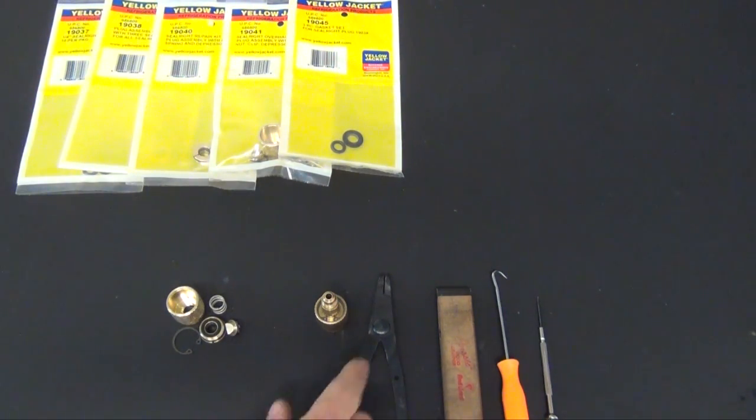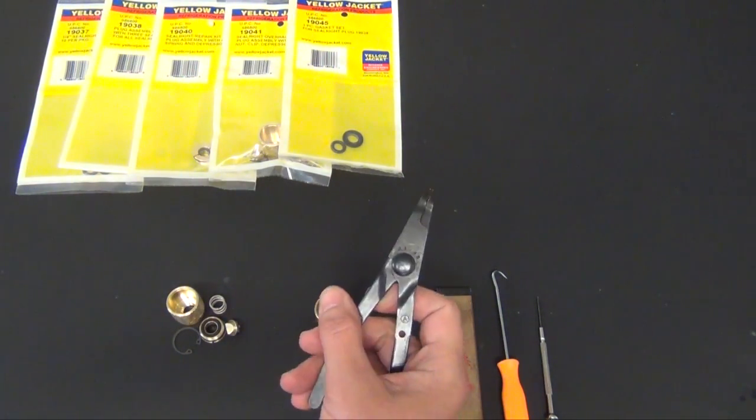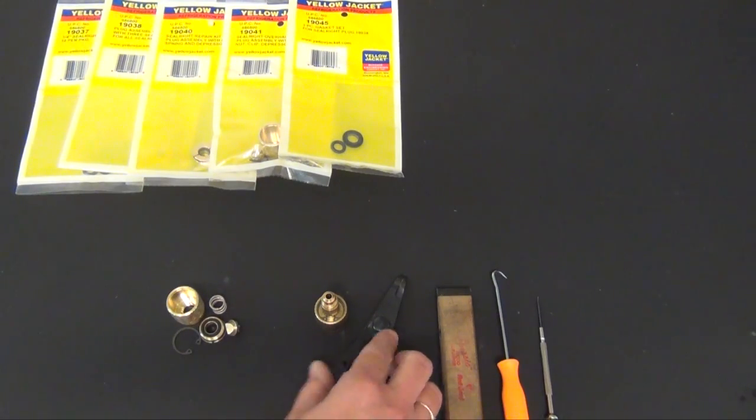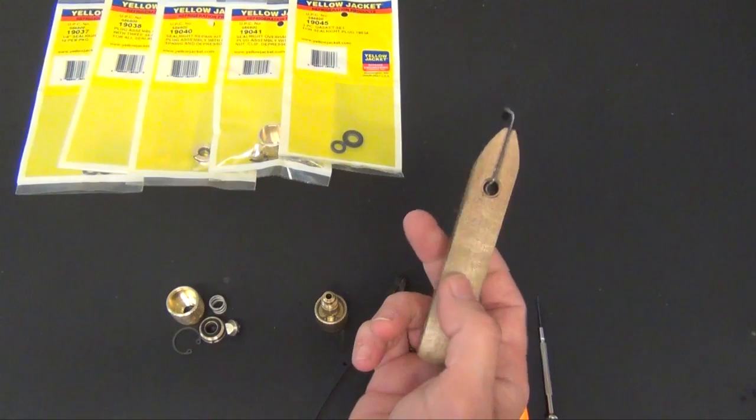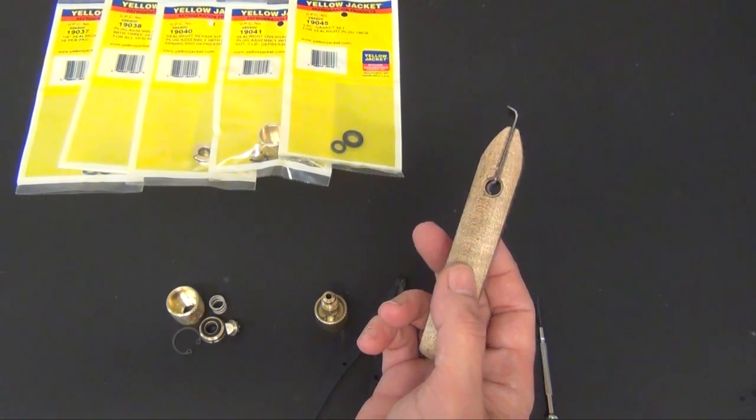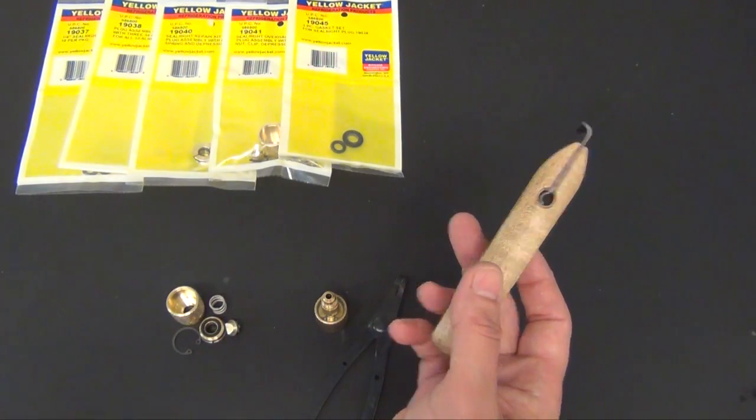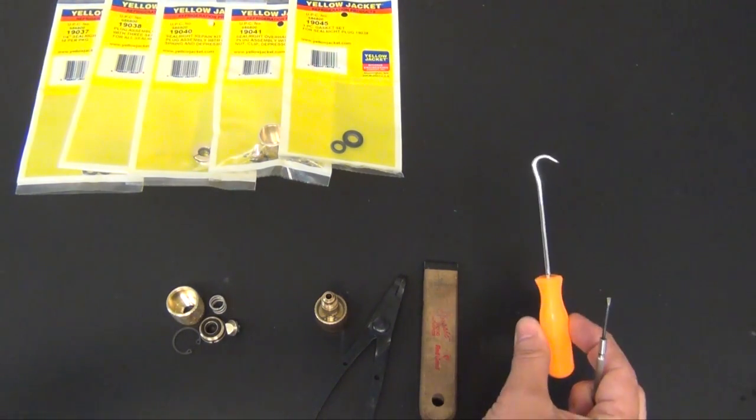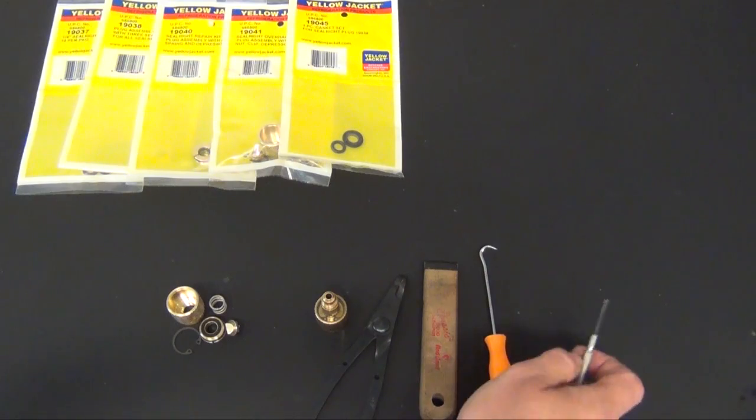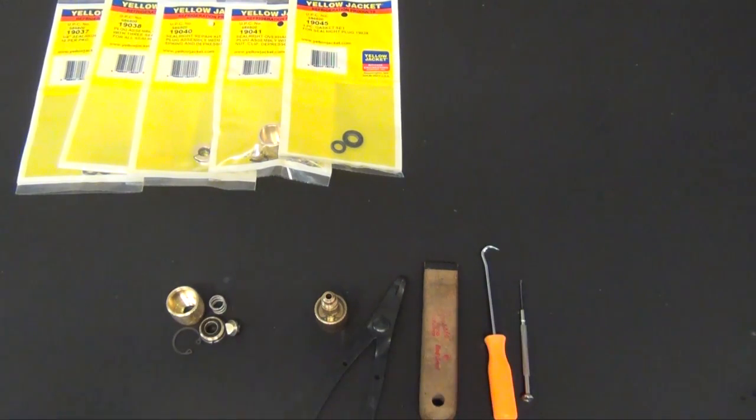The tools that you'll need: you'll need a pair of snap ring pliers. You'll need a putty knife, scraper, straight edge or a steel ruler to remove the plug retainer, and a small screwdriver or a mini pick. These we'll use to replace the gaskets.